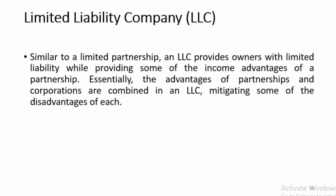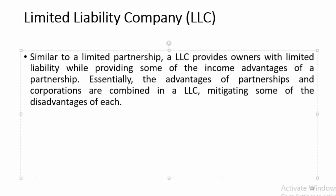The fourth type is limited liability company. A limited liability company is a type of business that combines the benefits of limited partnership plus corporation. In the partnership, we have seen there is unlimited liability. But limited partnership has limited liability. So the limited liability element is key to the limited liability company.